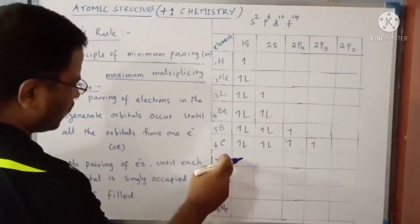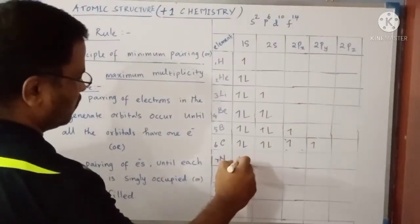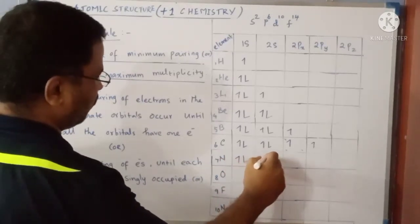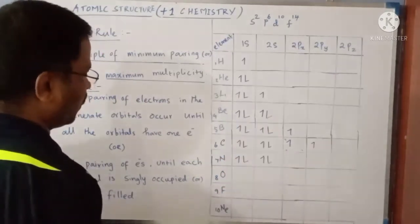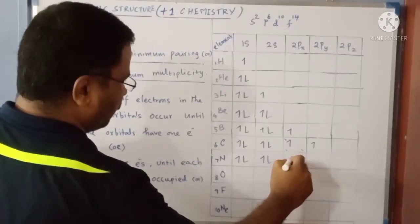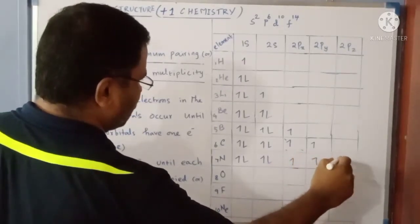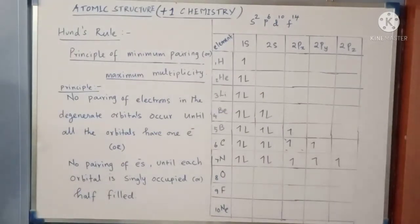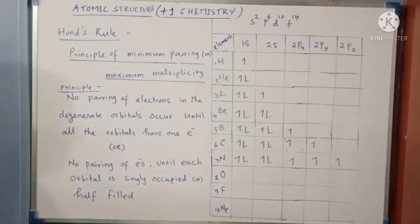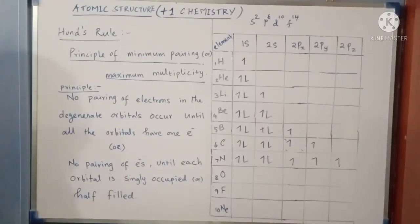For nitrogen with atomic number 7, there are 7 electrons. After 2 in 1s and 2 in 2s, three more electrons remain. The fifth electron goes to 2Px, the sixth to 2Py, and the seventh electron is added to 2Pz. In the case of nitrogen, all 3 P orbitals each have 1 electron, so from the next element onwards, electron pairing can take place according to Hund's Rule, because each orbital is singly occupied.